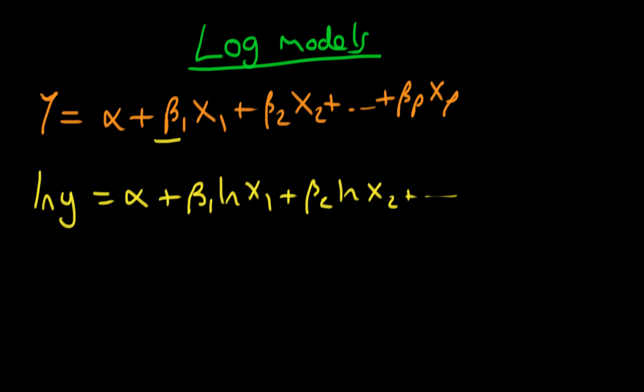What do the individual beta coefficients here actually mean? You can still think about them in the same terms as we thought about the linear regression, but in this circumstance it doesn't quite mean exactly the same. In this context it says, if log x1 increased by one unit, what would be the corresponding increase in log y? That's quite a clunky description and it doesn't really tell us anything.